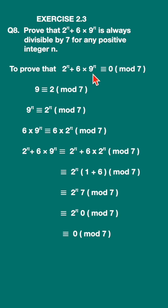Now we want 6 into 9 raised to n. So let us multiply LHS with 6, so we should multiply even RHS with 6. 6 into 9 raised to n congruence 6 into 2 raised to n mod 7.